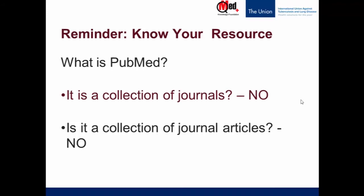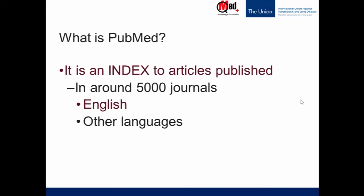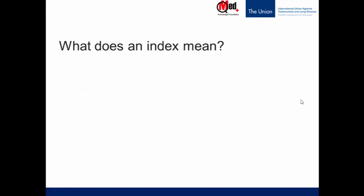Let's understand what exactly PubMed is. PubMed is an index to articles published in around 5,000 plus journals — a number that is constantly increasing every year. These journals may be English language journals or journals in many other languages. But the full article is not in PubMed; PubMed is only an index. So what is an index?